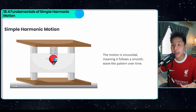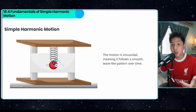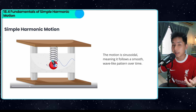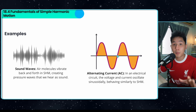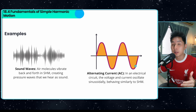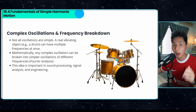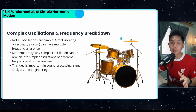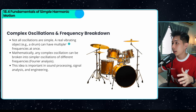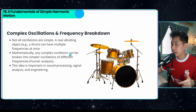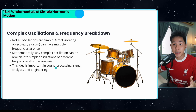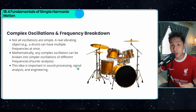I have an example here that illustrates how SHM follows a sinusoidal pattern. Examples of SHM include sound waves and alternating current — they all behave similarly to simple harmonic motion. Not all oscillations are simple, so for complex oscillations you sometimes have to break them down. Mathematically, any complex oscillation can be broken down into simple oscillations, which is important in sound processing, signal analysis, and engineering.